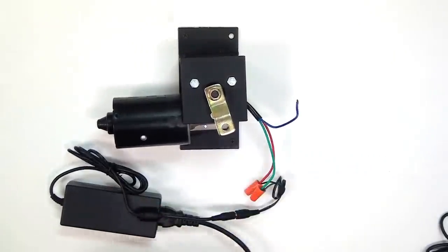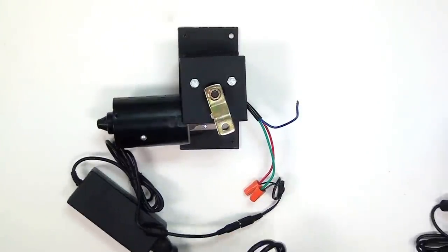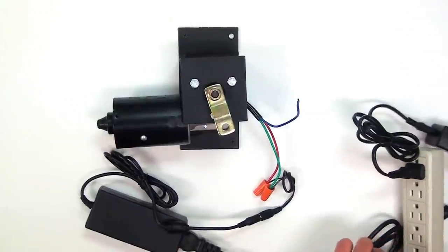First I'm going to run the prop motor with the low-speed wire hooked up to the 12-volt, 5-amp power supply.